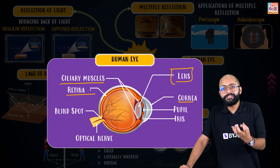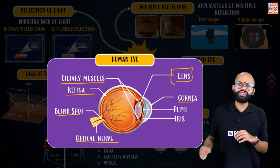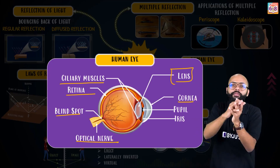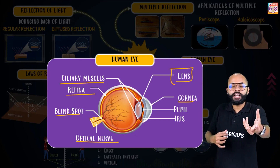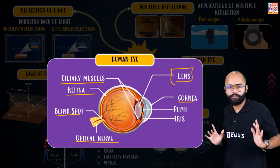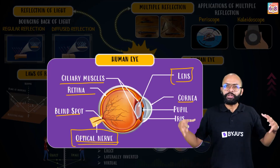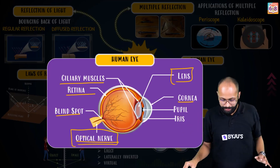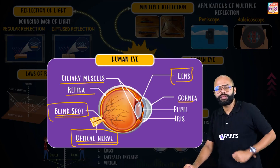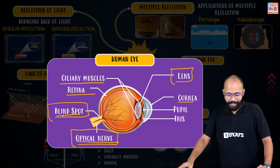Next we have the retina — it is the screen of your eye where image formation happens. On the retina there are photoreceptor cells. Then there are optical nerves: once the image is formed on the retina, your brain needs to understand it. The optical nerves are like a cable network connecting your eye to your brain — they take the image from the retina as electrical signals and carry it to the brain, which then interprets it. The point where the optical nerves form a bundle and go towards the brain is called the blind spot — at this point there are no photoreceptor cells, so no image is formed here.